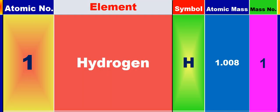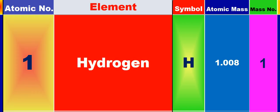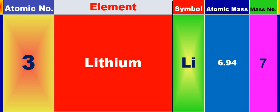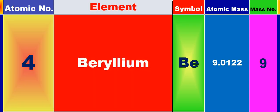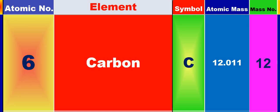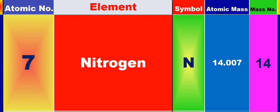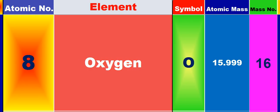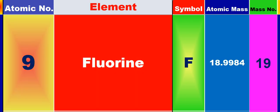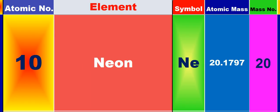Atomic number. Element 1: hydrogen. 2: helium. 3: lithium. 4: beryllium. 5: boron. 6: carbon. 7: nitrogen. 8: oxygen. 9: fluorine. 10: neon.